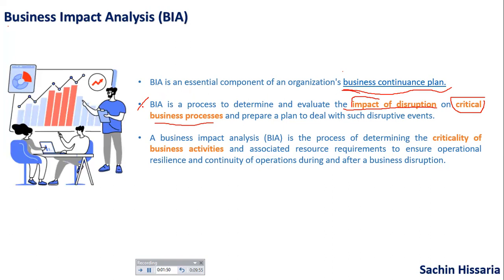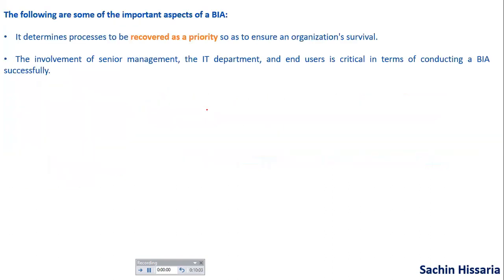In BIA, we will determine the criticality of business activity. There are some other important aspects of the BIA — like in the BIA, you will determine the processes which are recovered as a priority: which processes we need to recover on a priority basis.